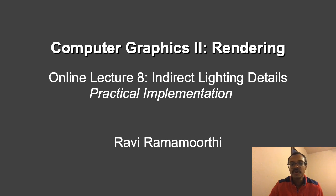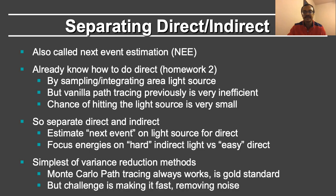Finally, we talk about what you need to create an actual practical implementation of your path tracer. The key idea is to separate direct and indirect light. This is often also called next event estimation. You already know how to sample direct light — you sample the area light source and integrate over it. But the simple vanilla path tracing done so far is very inefficient.